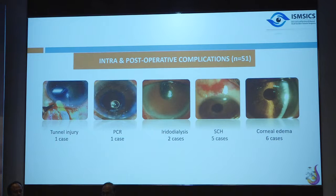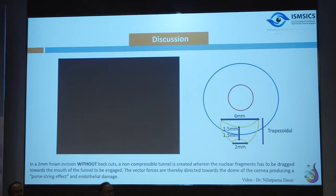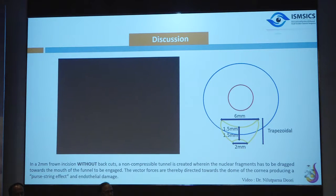Intraoperative complications included iridodialysis in two cases and post-op corneal edema in six cases. These occurred because back cuts were not given initially — without back cuts, the compressible tunnel is not created, so nuclear fragments are dragged rather than glided out. This directs vector forces toward the dome of the cornea, pulling the central zone toward the tunnel. There is a learning curve, but perseverance, discipline, and an open-minded approach are needed.